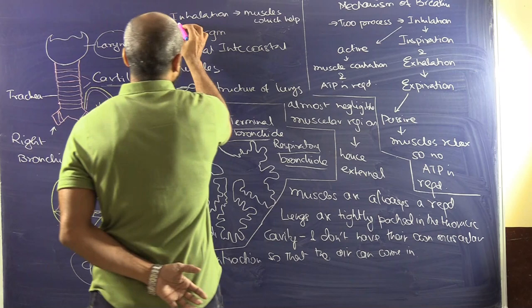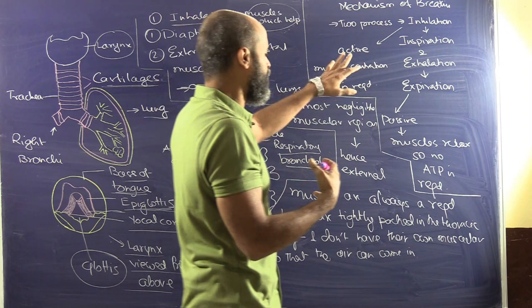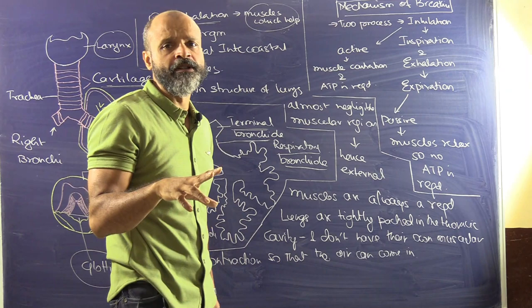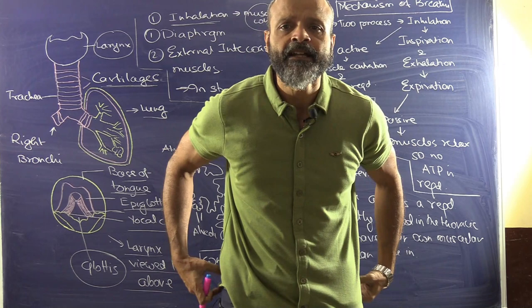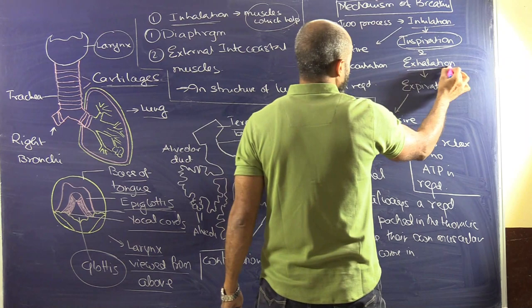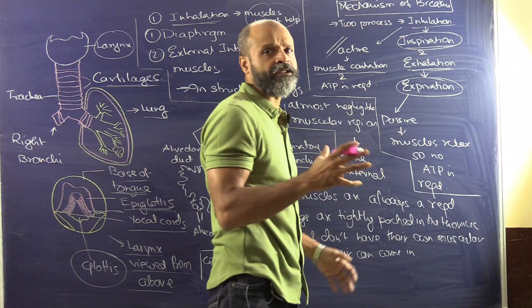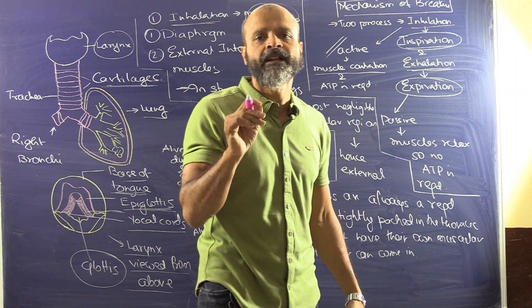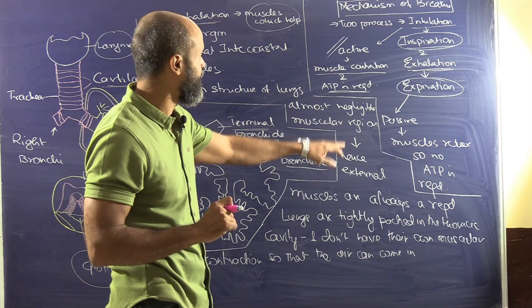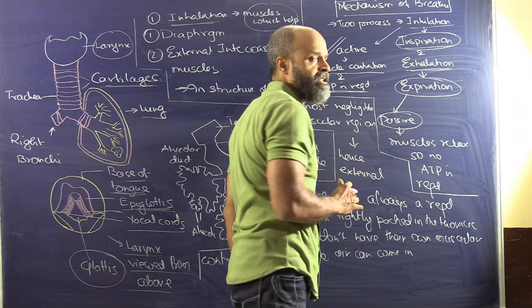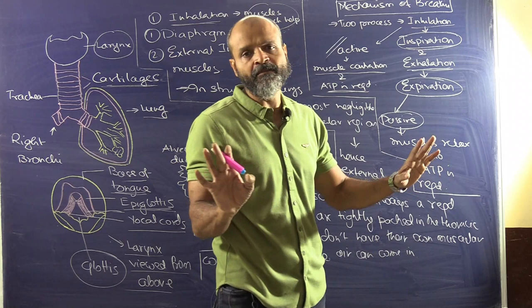The mechanism of breathing in humans takes place in two steps: inhalation and exhalation. In scientific terms, inhalation is called inspiration and exhalation is called expiration. Inhalation is an active process because there is muscle contraction, which requires ATP. Expiration is a passive process — the muscles relax, no ATP is required, and it happens on its own.